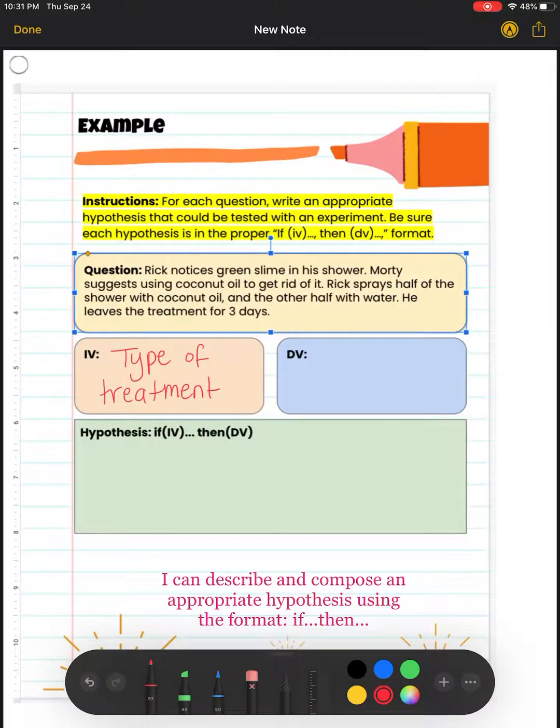We know that Rick is trying to figure out which of these treatments is going to reduce the amount of green slime that he has in his shower. So essentially, what is he measuring? What is he observing? He is trying to see which one of the treatments is going to reduce the amount of green slime in his shower. So he is measuring or observing the amount of green slime.